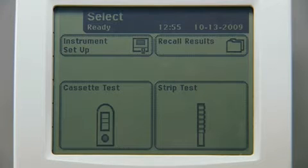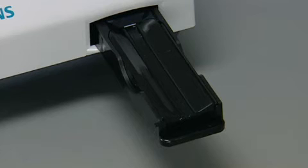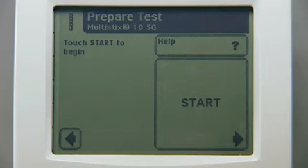From the main select screen touch strip test to access the prepare test screen. Verify that the test table inset is positioned with the reagent strip holder facing upward. Touch the start button.